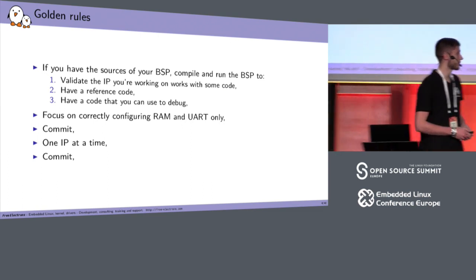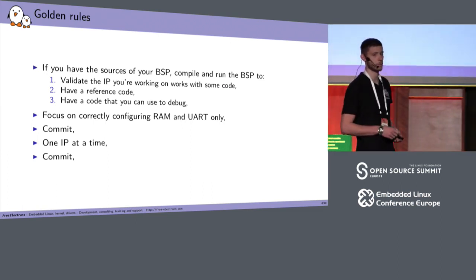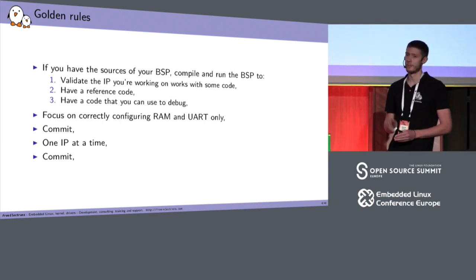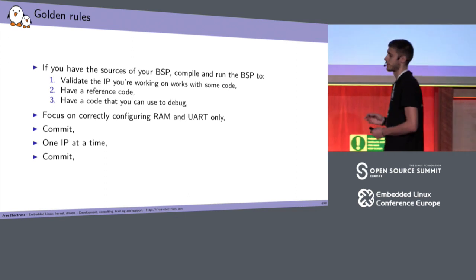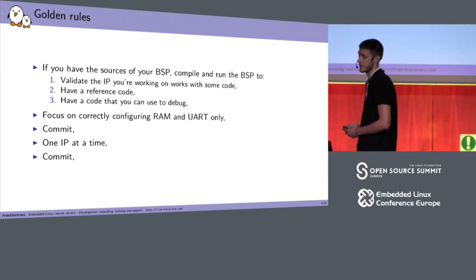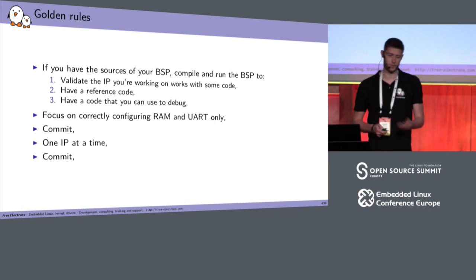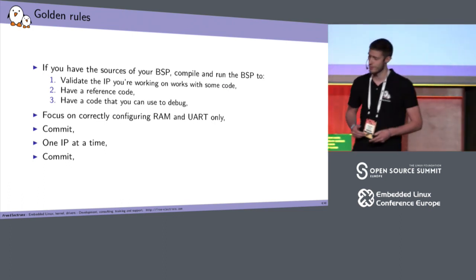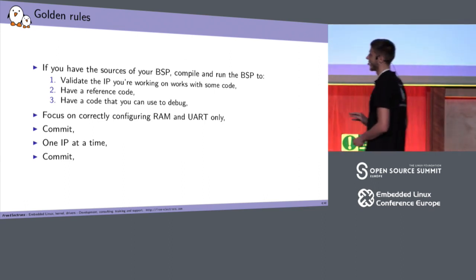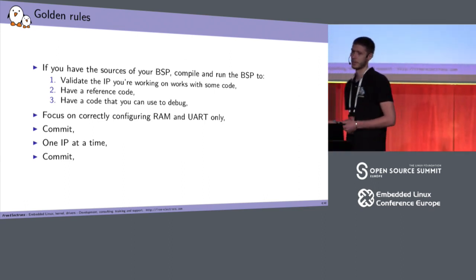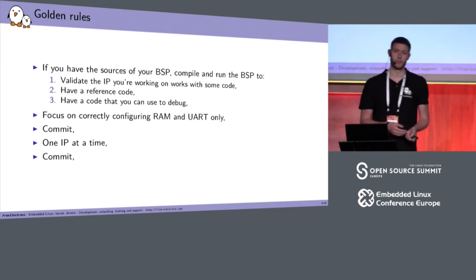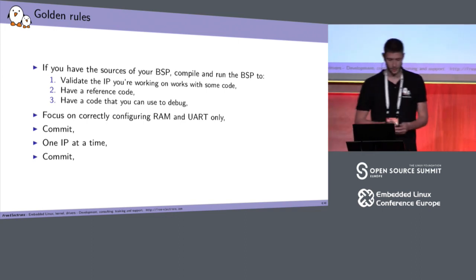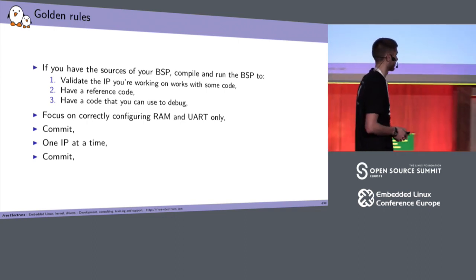Then you want to focus only on RAM initialization and UART. Only that. And once you have UART, you can start to debug and add new IPs and new features. So stop there — only RAM, UART, commit, it's okay. Then you can add one IP at a time and then commit, because sometimes you will break things when you add support for a new IP and break another. Then you can bisect with Git. So these are the golden rules.